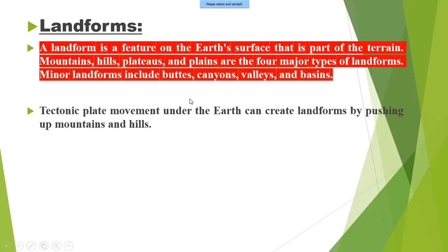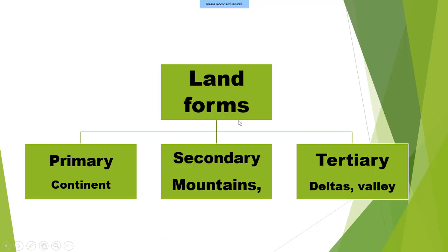So what is landforms? Landforms is a feature on the earth's surface that is a part of terrain. Terrain means any region on the planet earth is a part or is a feature on the earth's surface that is a part of terrain. Mountains, hills, plateaus, plains are the 4 major types of landforms. Minor landforms include the buttes, canyons, valleys and basins.